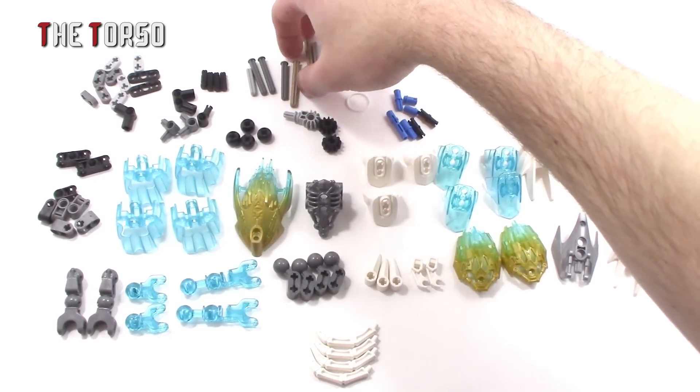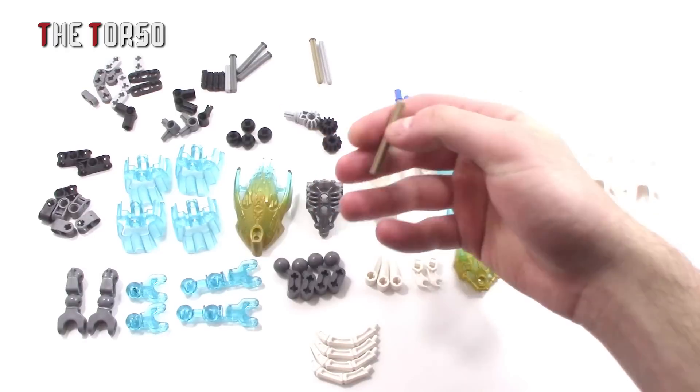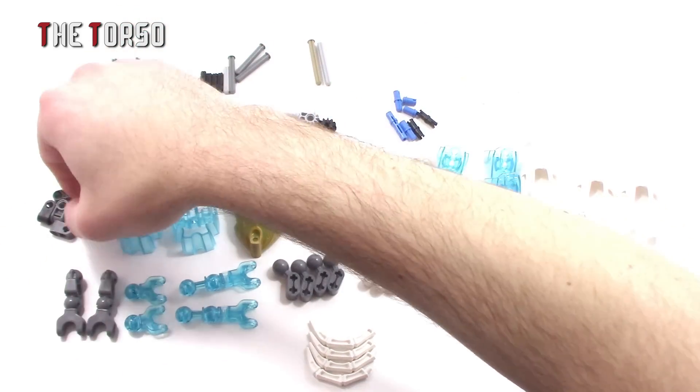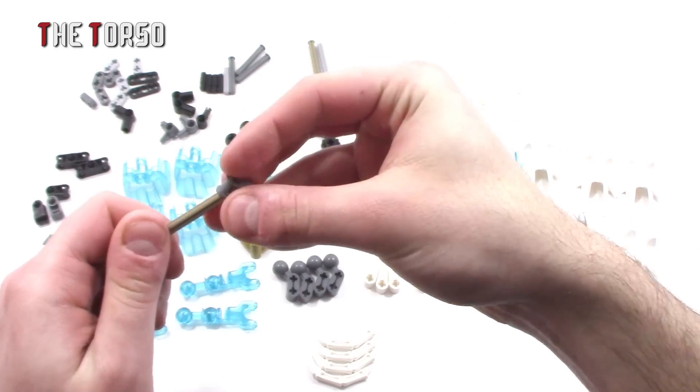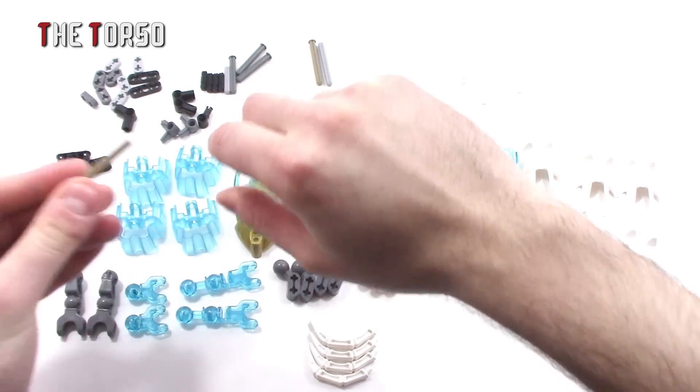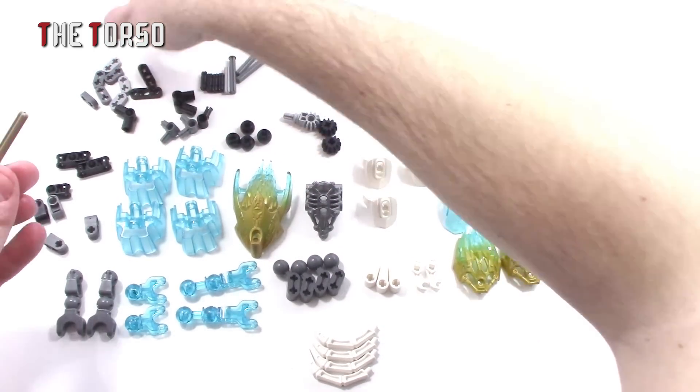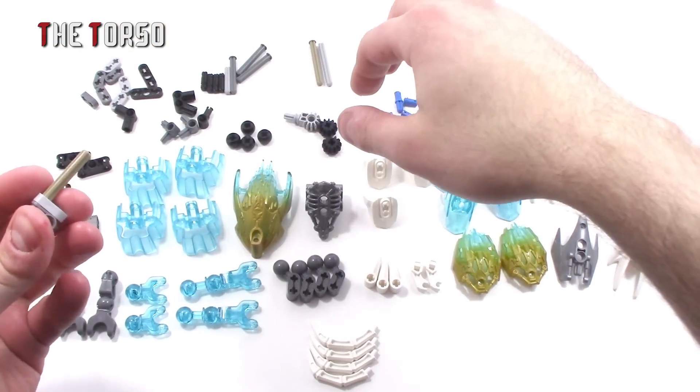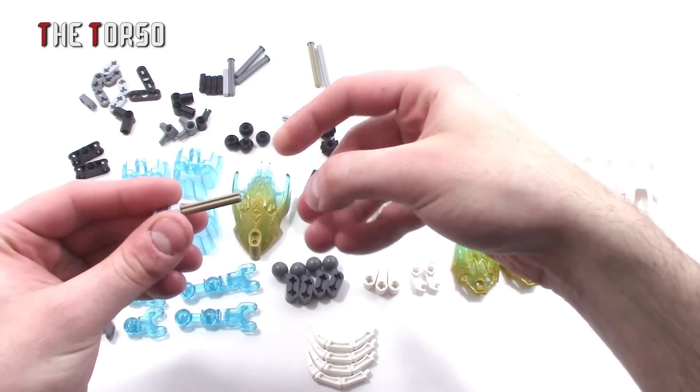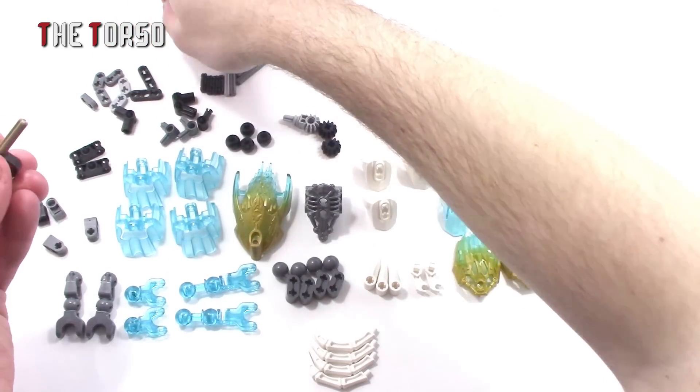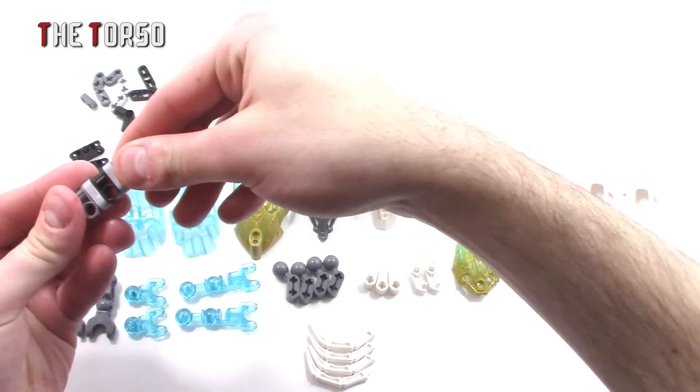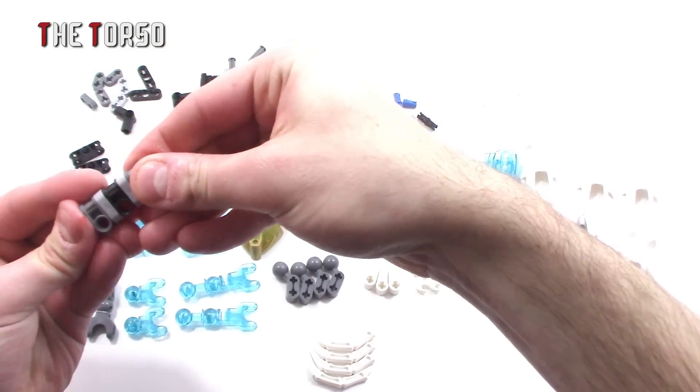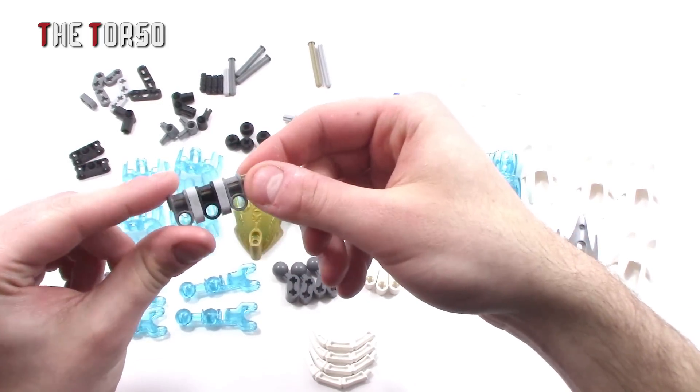So we're going to start with the core of the body. We'll need one of these length five axles with stoppers and just get started here. This is my first time doing a let's build in this kind of format, so if you see something completely off, let me know and I'll try to fix it.